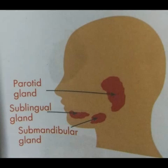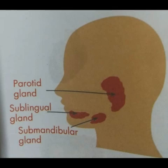The process of digestion starts in the mouth. The food is chewed and crushed in the mouth with the help of teeth. In the mouth, there is a fluid called saliva. It gets mixed with the food in the mouth, making it easier to swallow, and saliva also helps in the digestion of food.